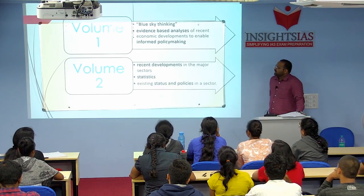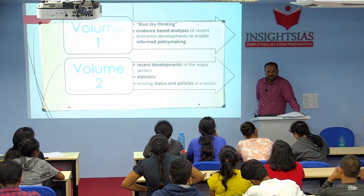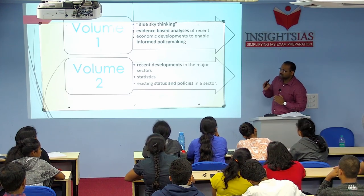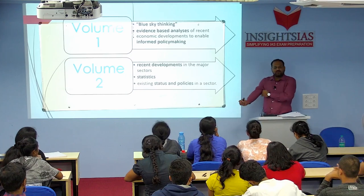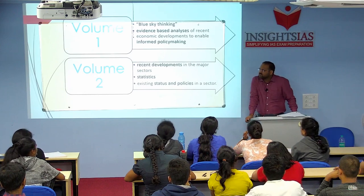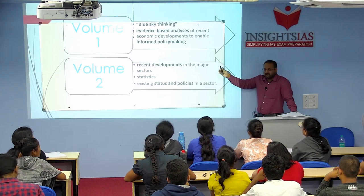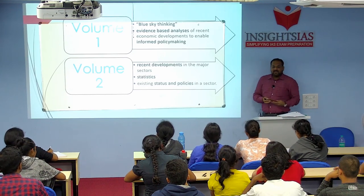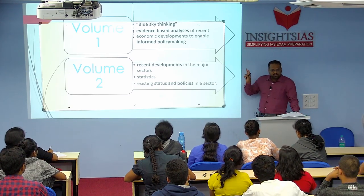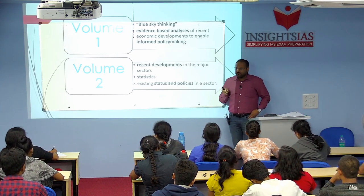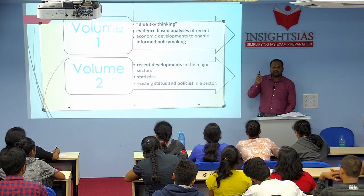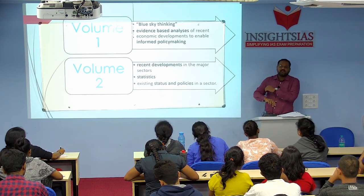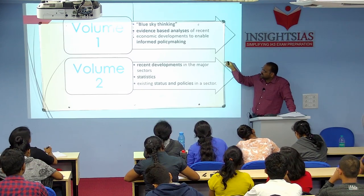Volume 1 has 11 chapters presenting blue sky thinking — new ideas to help the economy achieve its targets. They provide evidence-based analysis: this idea is being implemented in the USA, in Canada. These two keywords are important: 'evidence-based analysis' and 'informed policy making.' Use them in your answers — when writing that the government should solve a problem, mention that evidence-based analysis should be done first, followed by informed decision making.